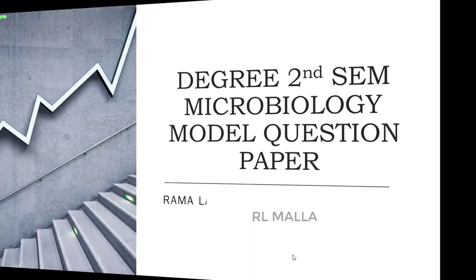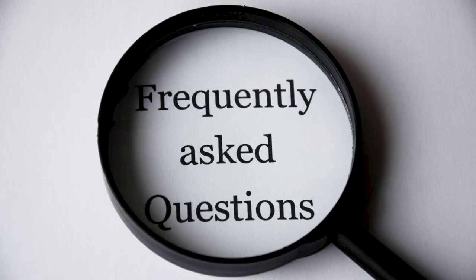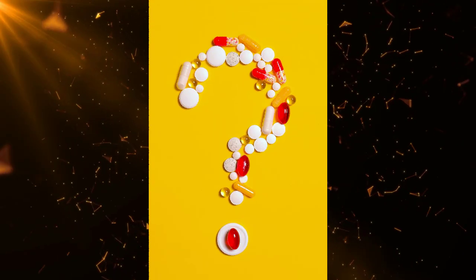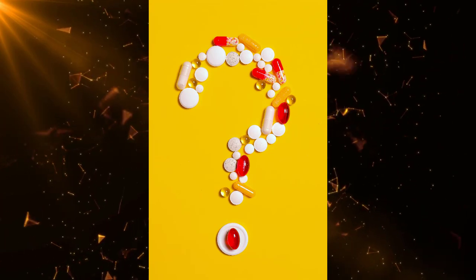First of all I would like to tell you about the question paper pattern. This paper is for 75 marks and these 75 marks are divided into two sections: Section A and Section B. Section A is for 25 marks and Section B is for 50 marks. Section A contains 8 questions but you have to answer only 5 questions. Each question carries 5 marks — 5 times 5 equals 25.